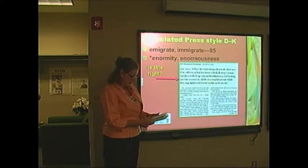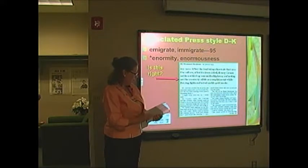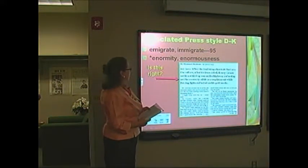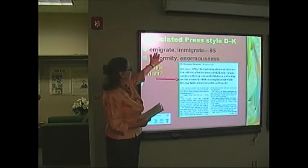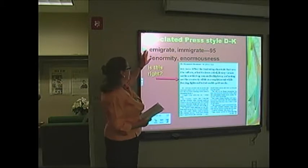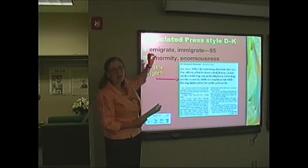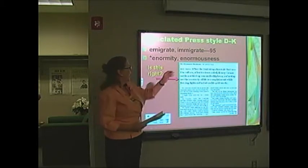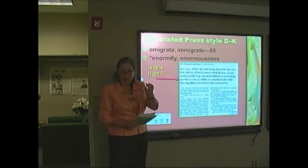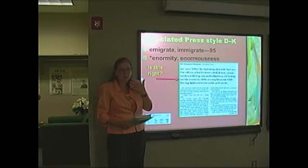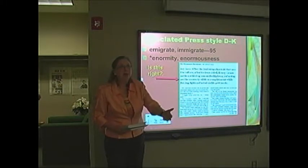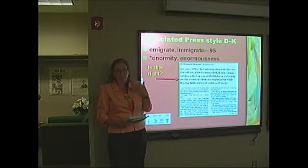Emigrate and immigrate is on the left-hand column of page 95. The way to remember this is to look at the prefix. The E prefix means out of, and the IM prefix means into. So I emigrate out of Russia, and I immigrate with an I into the United States.